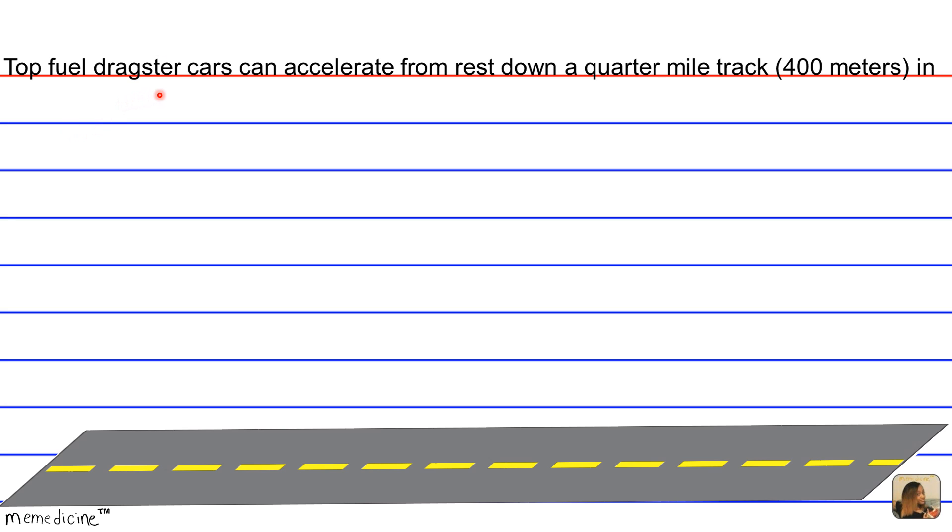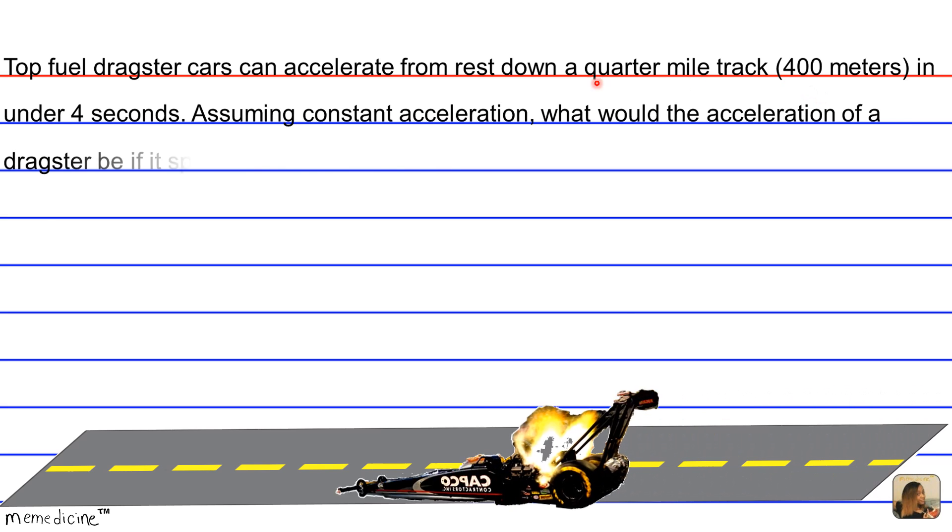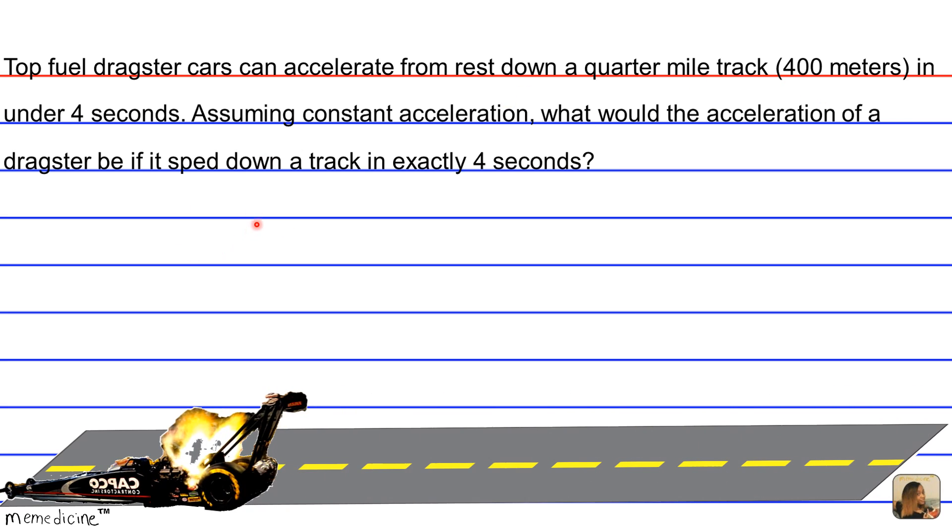Top fuel dragster cars can accelerate from rest down a quarter mile track, that would be 400 meters, in under four seconds. Assuming constant acceleration, what would the acceleration of a dragster be if it sped down a track in exactly four seconds?